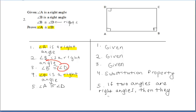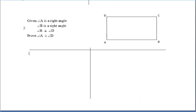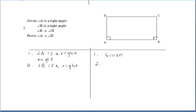Maybe some of you were thinking this isn't the only way to go about it because your mind was going in a different direction. I want you to keep an open mind with these proofs because sometimes there is more than one way to do it. Pause and think of another way. This is a really good example of a proof that can be done in more than one way and still be correct, so long as all the information is provided.